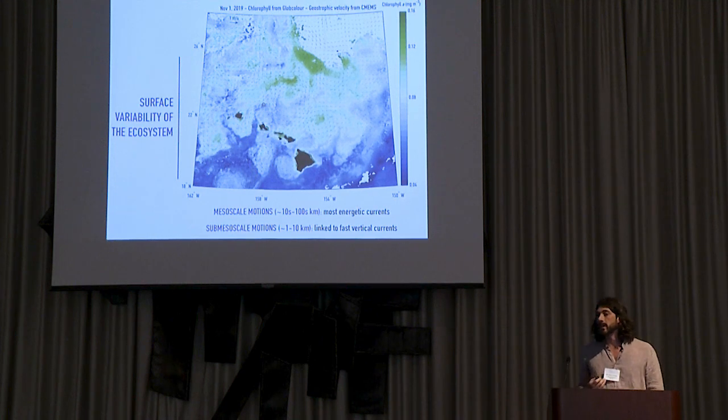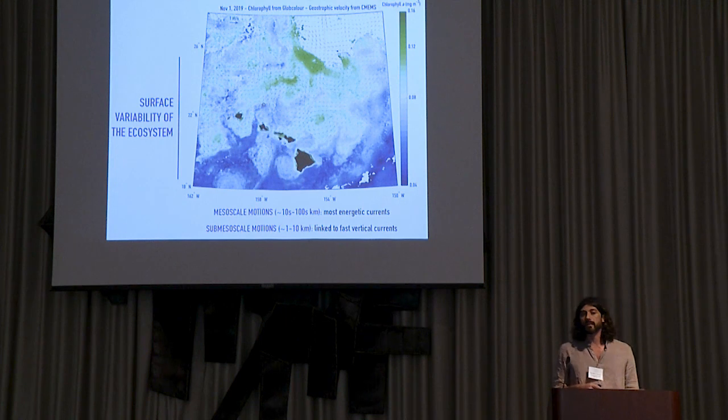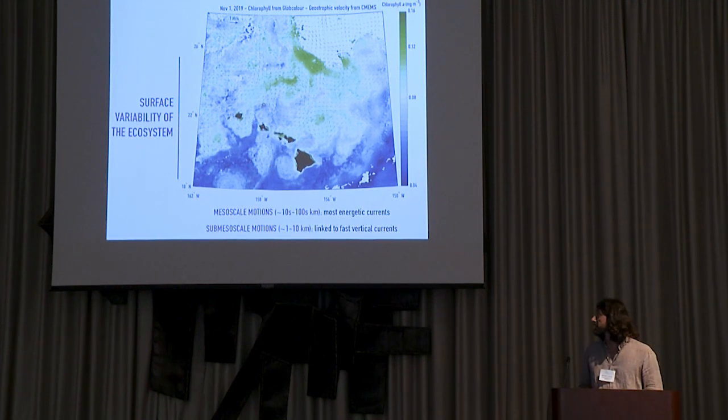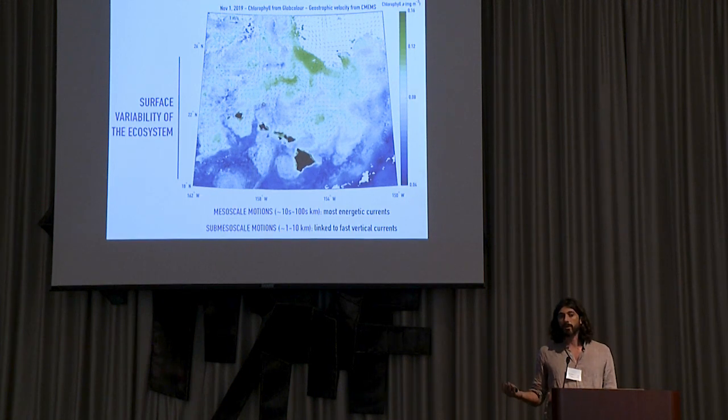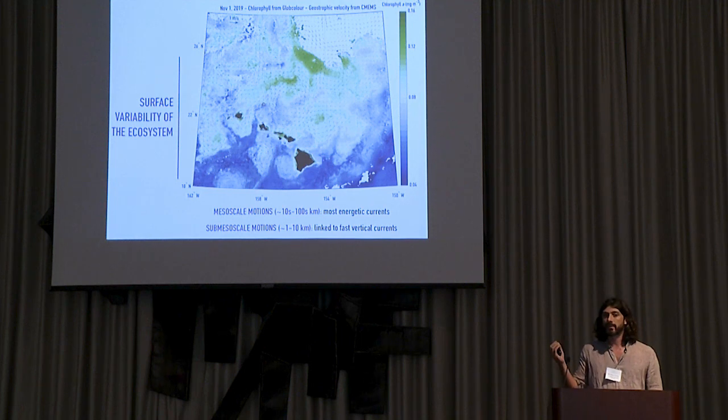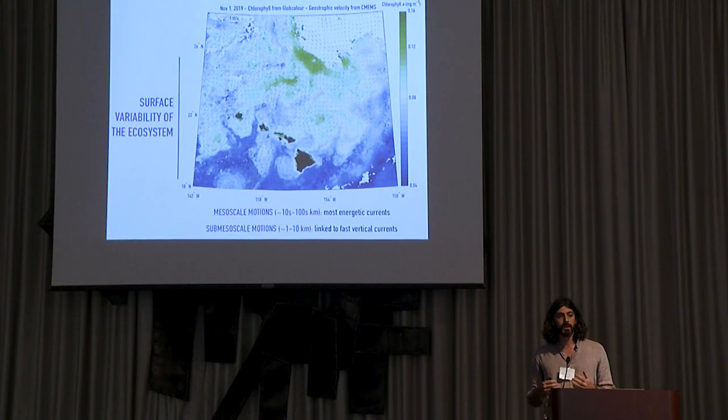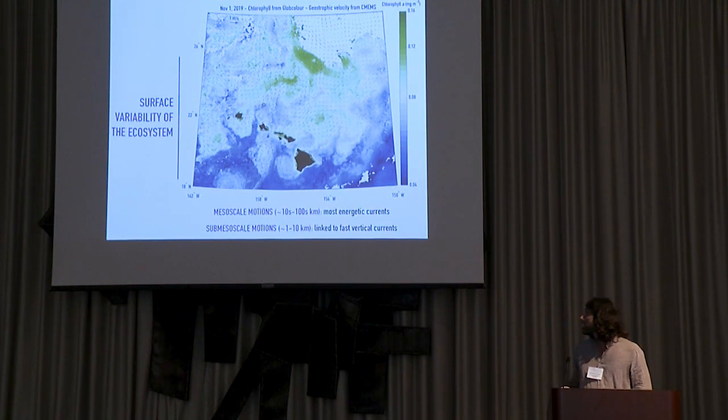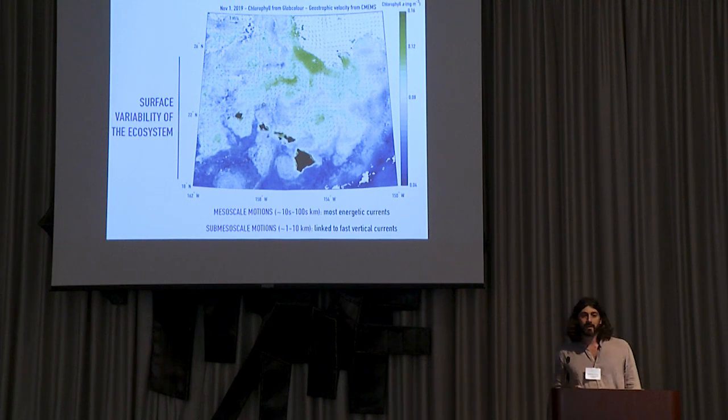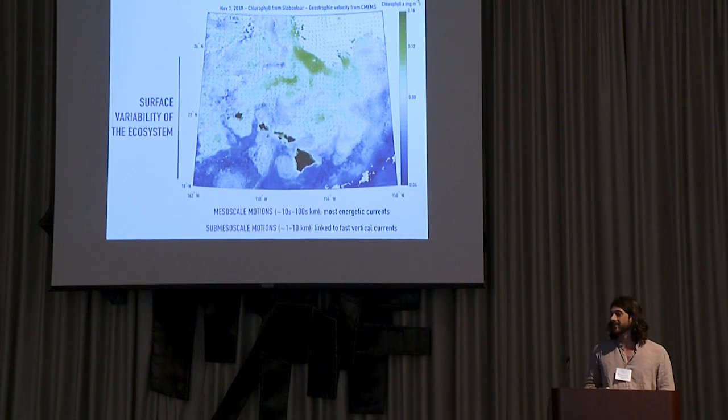The scales that I'm interested in are mesoscale and submesoscale motions, approximately from one kilometer to several hundred kilometers. They're interesting because they contain most of the kinetic energy of ocean currents, and at the submesoscale in particular, we have localized upwelling and downwelling very important for nutrient cycling. But I'm really not a surface guy. I'm more of a subsurface enthusiast.